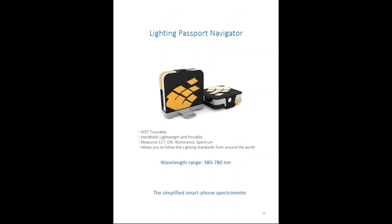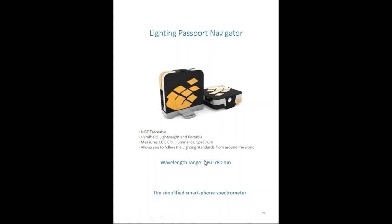The newest spectrometer is the Lighting Passport Navigator, which has a few basic functions: it can measure color temperature, color rendering index, illuminance, and spectrum. It was developed for customers who just want a few basic measurements without all the complex features of other models. Its range is from 380 to 780 nanometers, starting from the ultraviolet and going into the far-red region.